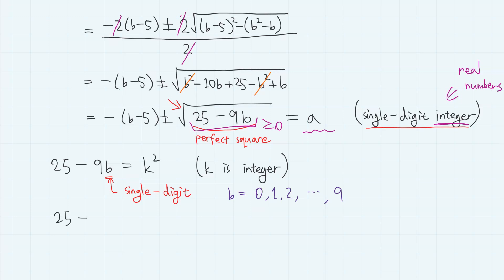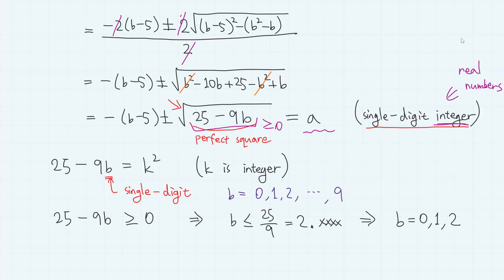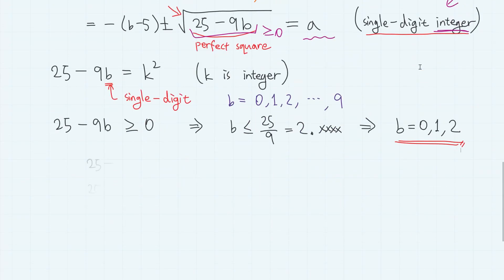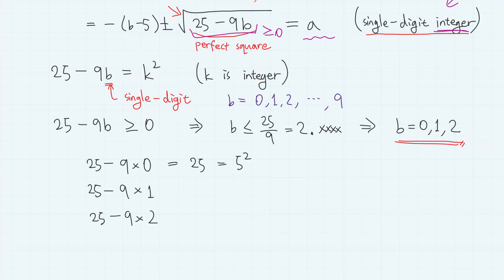So we have the additional condition that 25 minus 9B must be non-negative, which gives B is less than or equal to 25 over 9, which is approximately 2.7. This leaves only 0, 1, and 2 as possible values. Testing them: when B equals 0, we get 25, which is 5 squared. When B equals 1, we get 16, which is 4 squared. When B equals 2, we get 7, which is not a perfect square. So B can only be 0 or 1.